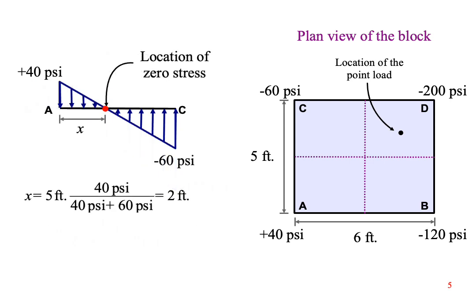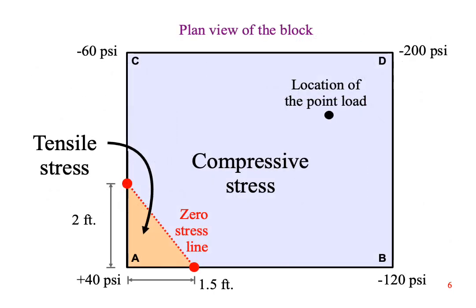We can do the same calculation for the edge between points A and C. Again, using similar triangles, we find that the location where the stress is zero is two feet from point A. Now, let's plot these points on the plan view of the block, then connect the dots.